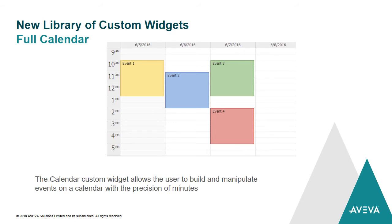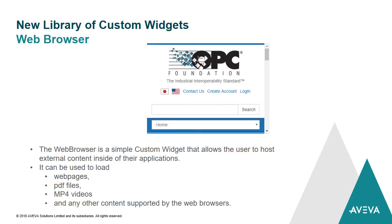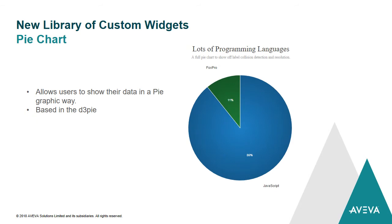Here we have the full calendar. The calendar lets you manipulate events on a calendar with the precision of minutes. There's also a web browser widget — the good thing is that you can open PDF files, MP3, web pages, and MP4 videos — anything supported on web browsers. Things like pie charts are also available. Several things that we don't have a native object to do — now you can insert a custom widget. That's part of our solution in this service pack.